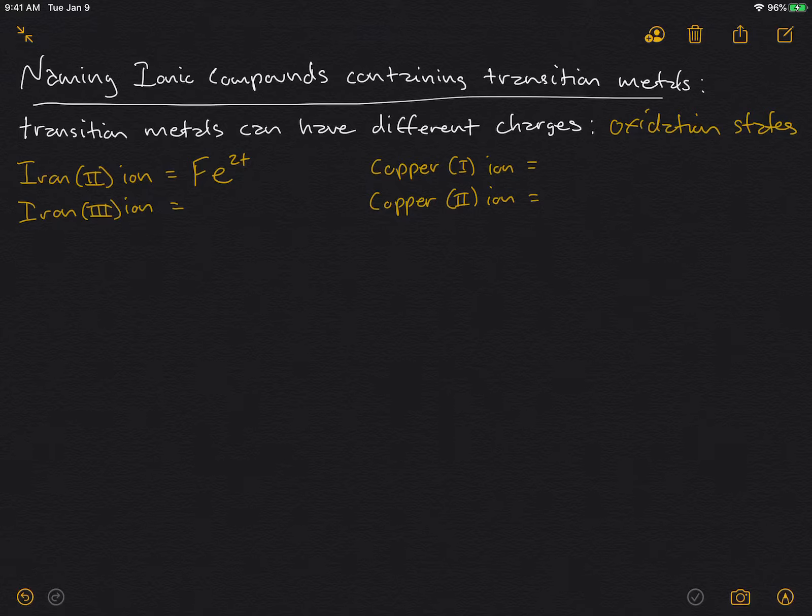So when you see that Roman numeral 2, that tells you what the charge is on the metal. The iron(III) ion has lost three electrons, so it has a 3+ charge, and these are the common oxidation states or charges of iron.